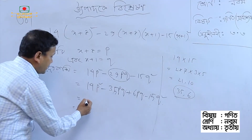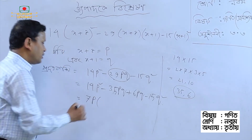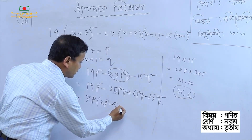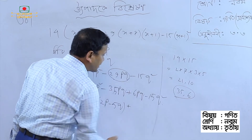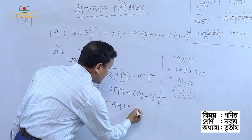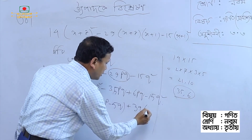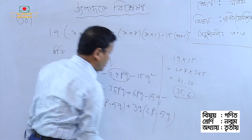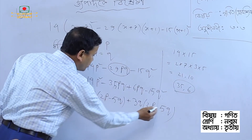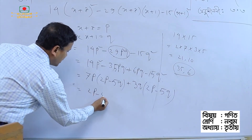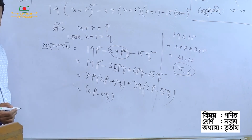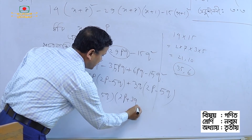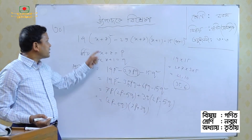We get 7P times 2P minus 5Q, plus 3Q times 2P minus 5Q. The common factor is 2P minus 5Q. So we have 2P minus 5Q times 7P plus 3Q. Back-substituting P and Q: 2 times x plus z minus 5 times x plus 1, times 7 times x plus z plus 3 times x plus 1.